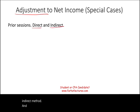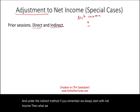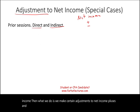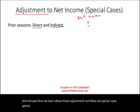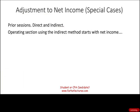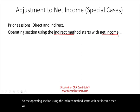Under the indirect method, we always start with net income. Then we make certain adjustments — pluses and minuses. We learned about those adjustments, but there are special cases and special circumstances where you would have a few unusual adjustments which need special attention. So the operating section using the indirect method starts with net income, then we make certain adjustments, and I'm going to list all the adjustments we'll be covering in this session.